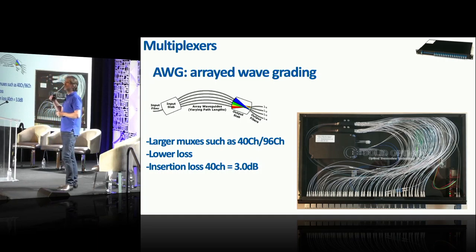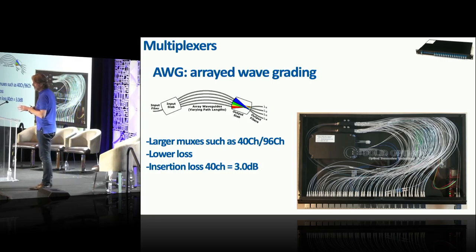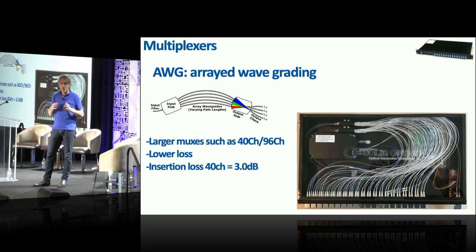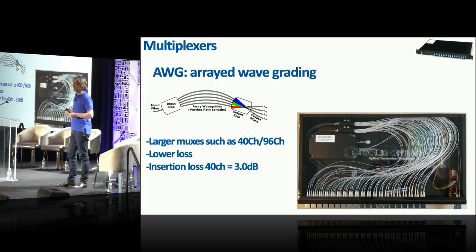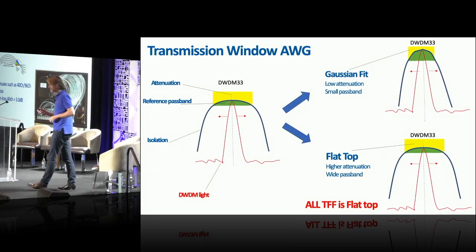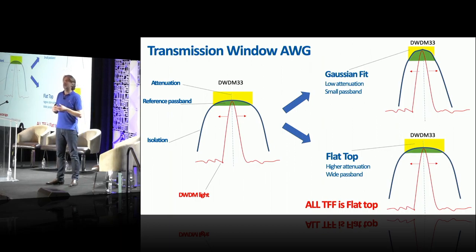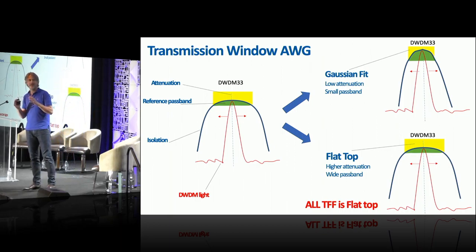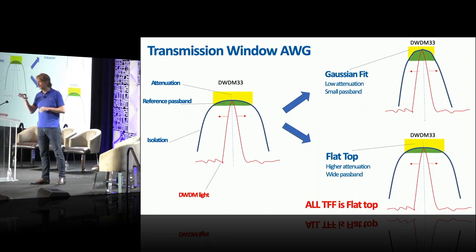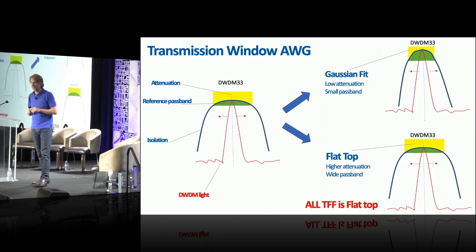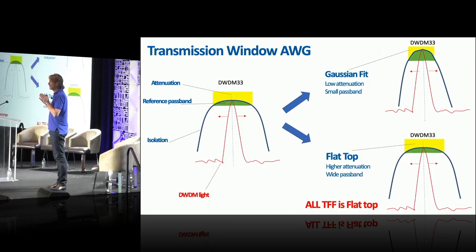For higher channel counts — 40 or 96 channels — you use an AWG, which is built on a chip. With 40 channels, you don't want 40 times 0.3 dB loss — that's 12 dB for just the mux. AWG is a more complex but cheaper solution for high channel counts, with insertion loss starting at 3 dB. The transmission window matters: DWDM light moves slightly left or right with temperature, staying within the reference passband.